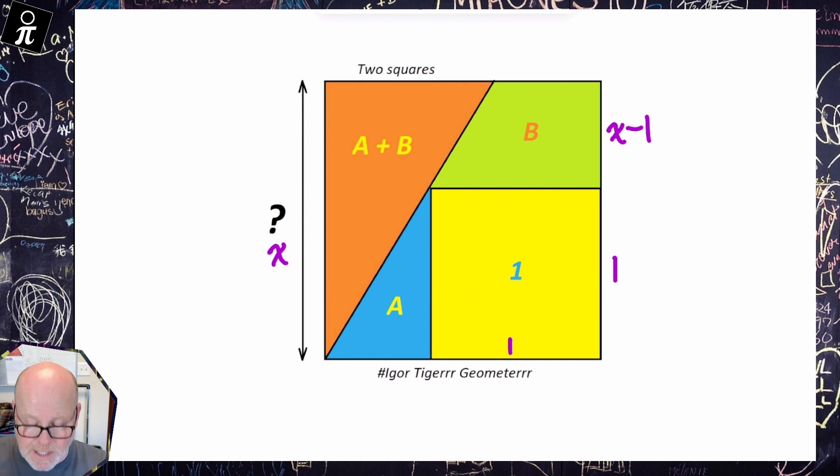Side length of one, because that's how we get one times one is an area of one square unit. So that means way over here is also X minus one, and I can draw this line.